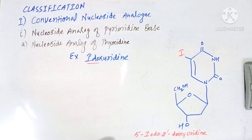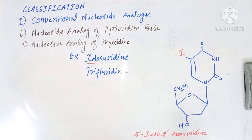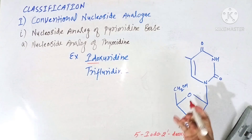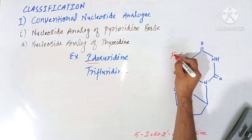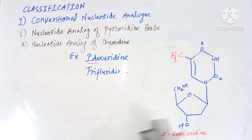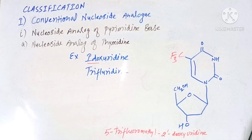The second drug in this class is trifluridine. Trifluridine has changes at the 5-position, where a trifluoromethyl group is present. The full name of this drug is 5-trifluoromethyl-2'-deoxyuridine.